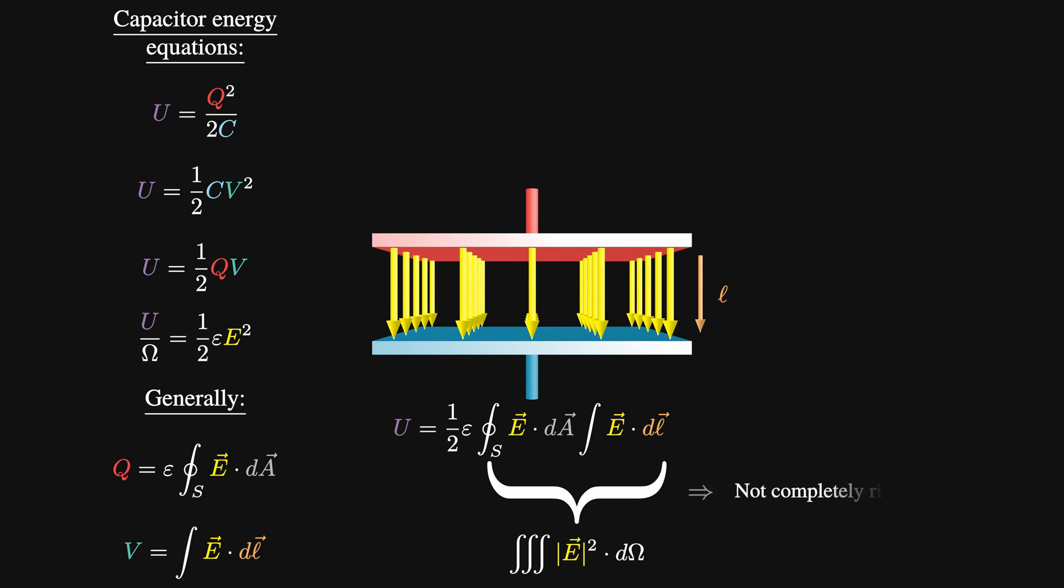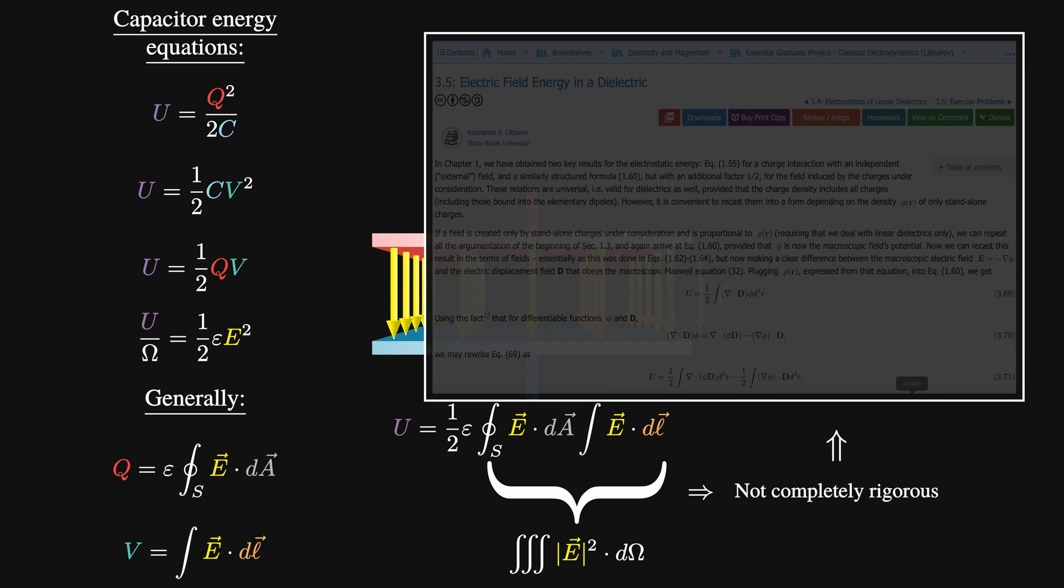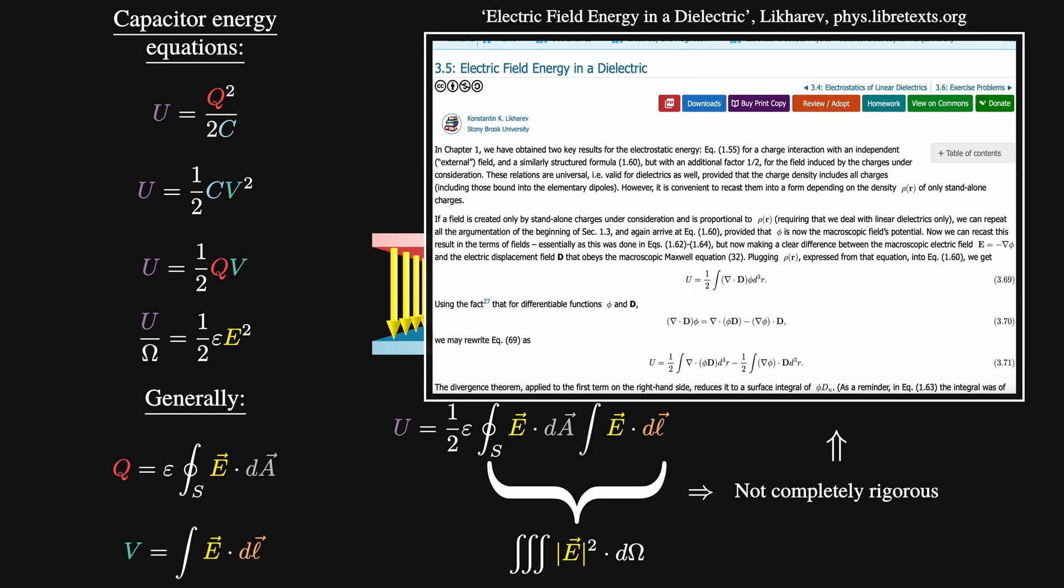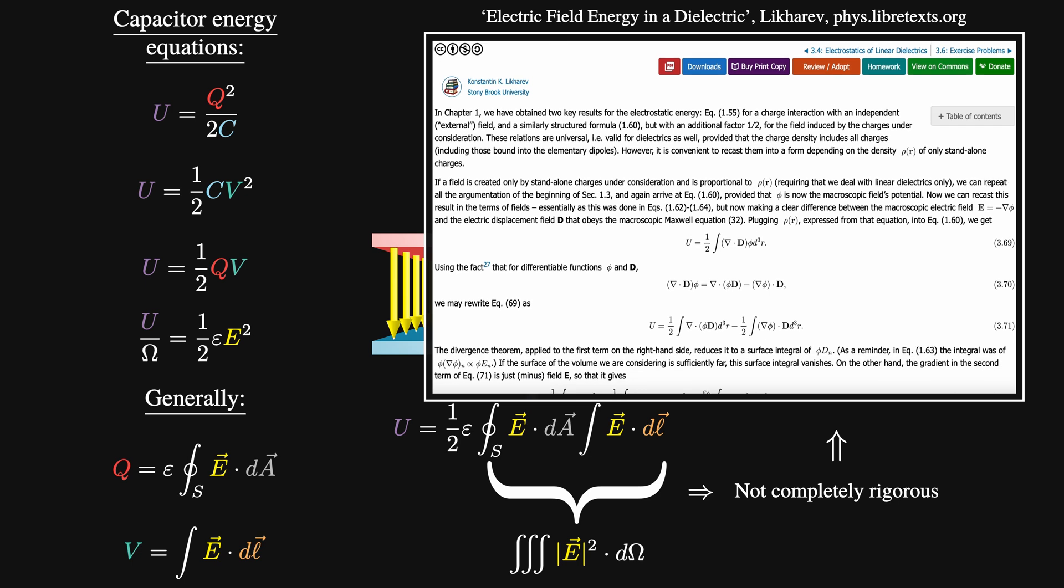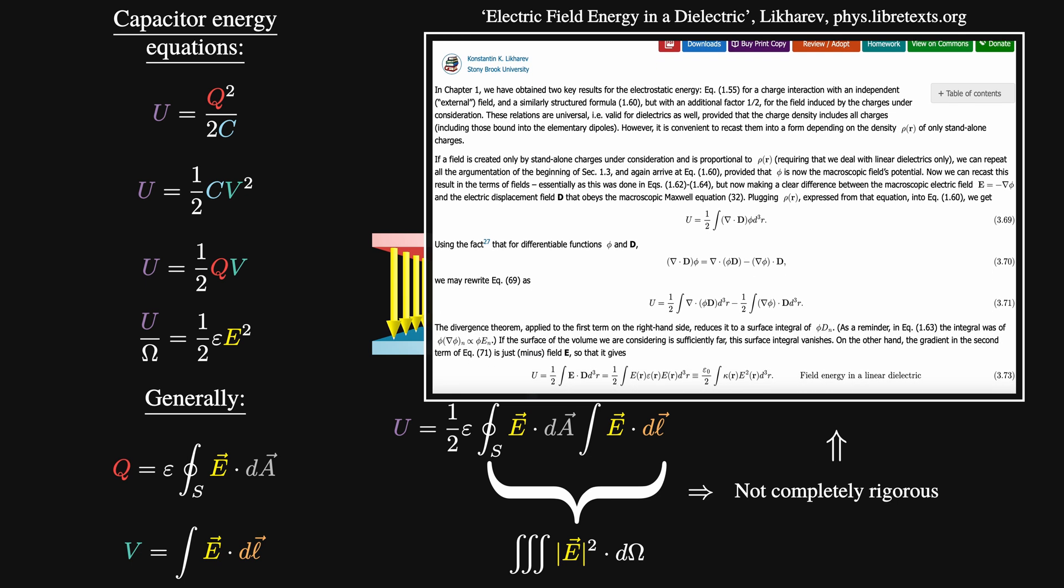Now, I will admit that this last step isn't actually necessarily true, as DA and DL aren't explicitly defined to reproduce the entire volume of our field. There is actually a more rigorous way of finding this result, which I won't cover here, but if you are curious, there are a few good derivations online, such as this one by Likharev on Libretexts.org. If anyone is interested in seeing this sort of thing in a video, you can always let me know in the comments section.